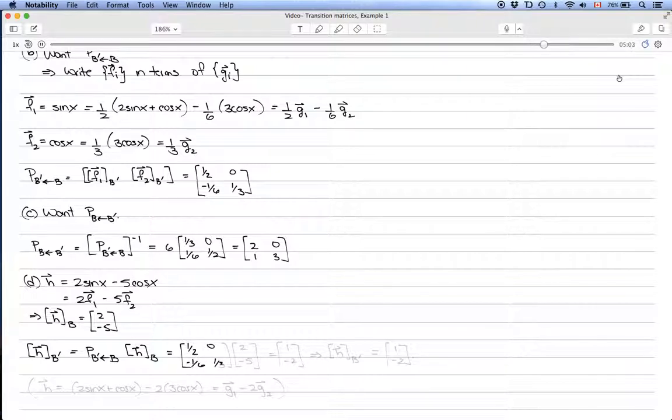So that gives us [1/2, -1/6; 0, 1/3] times [2, -5], which equals [1, -2]. So we have that the coordinate vector of h in terms of B prime is equal to [1, -2].